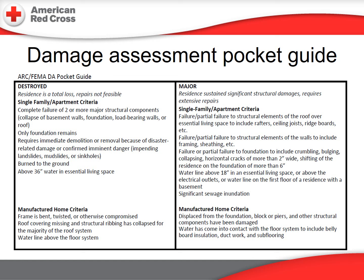Major for homes and apartments represents significant structural damage requiring extensive repairs, including complete or partial failure of the roof, walls, or foundation systems. Water in the home above 18 inches and up to 36 inches in an essential living space is considered major. Major for manufactured homes means the home is displaced from its foundation or other structural components have been damaged.